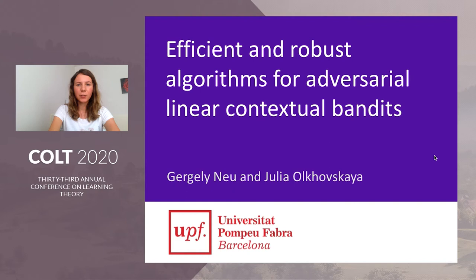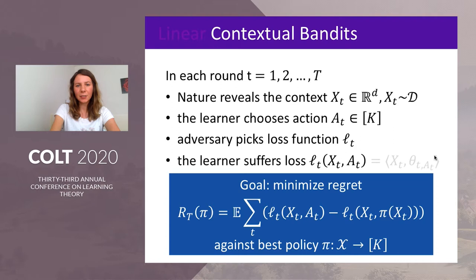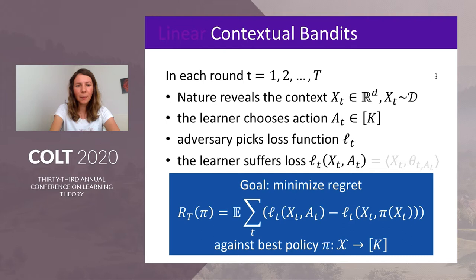We study the standard contextual bandit problem, which is a sequential game between the learner and the environment. At each time step, nature reveals a context vector generated from some fixed but unknown distribution. The learner observes this context vector and chooses one of k actions. Independently of the context vector and the chosen action, the adversary fixes a loss function, which is a mapping from the set of contexts and actions to the real values. At the end of the round, the learner suffers a loss according to the current context and the chosen action.